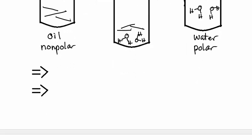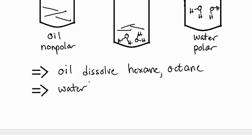So from this we can deduce that oil, which is nonpolar, will also dissolve other nonpolar species, such as hexane and octane. And water, on the other hand, will dissolve polar molecules, like itself, especially small polar molecules, like itself, and also ions, because it is so polar that ions also dissolve in it readily.